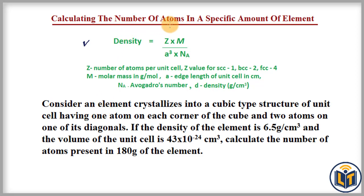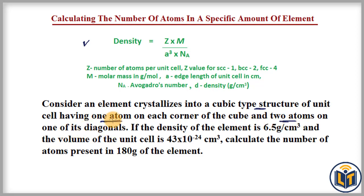The problem says that consider an element which crystallizes into a cubic type of structure — a unit cell having one atom on each corner of the cube and two atoms on one of its diagonals. Here you can see that one atom is present on each corner of the cube and two atoms are present on one of its diagonals.